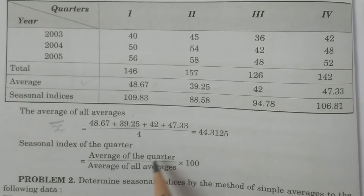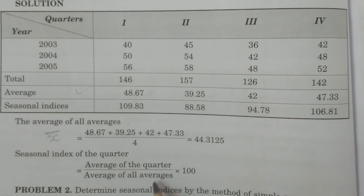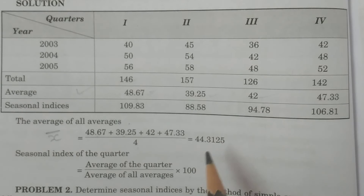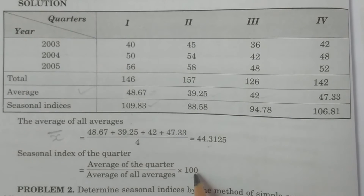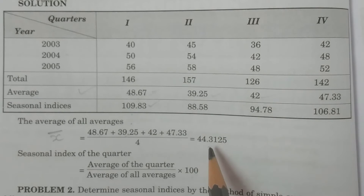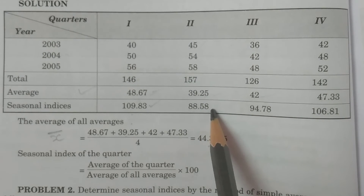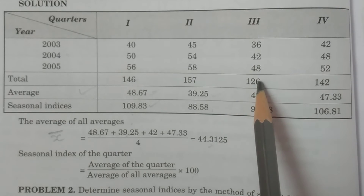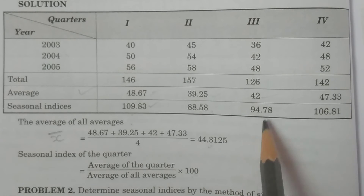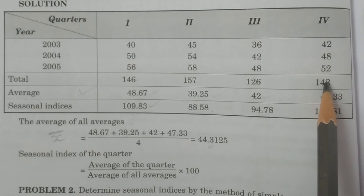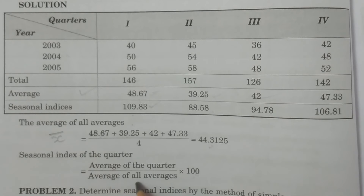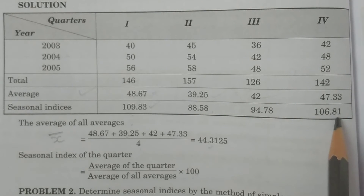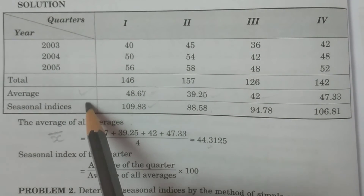Now apply the formula x̄ᵢ / x̄ × 100. For Q1: 48.67 / 44.3 × 100 = 109.83. For Q2: 39.25 / 44.3 × 100 = 88. For Q3: 42 / 44.3 × 100 ≈ 94. For Q4: 47.33 / 44.3 × 100 ≈ 106.81. These are the seasonal indices.